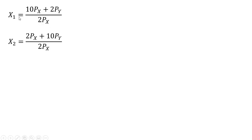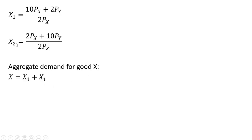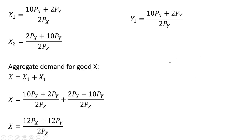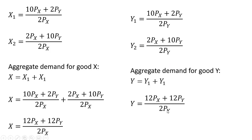Here are our demands for good X — consumer one and consumer two. The aggregate demand for good X is just adding these two equations up and simplifying. This is our aggregate demand for good X. Doing the same thing for good Y, the aggregate demand for good Y is as follows.